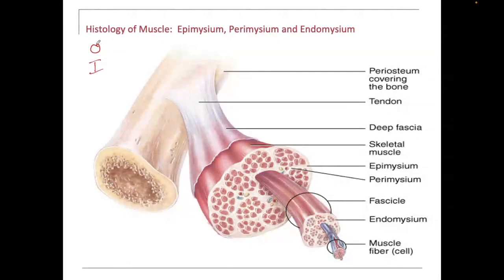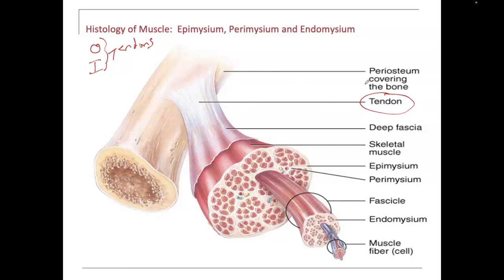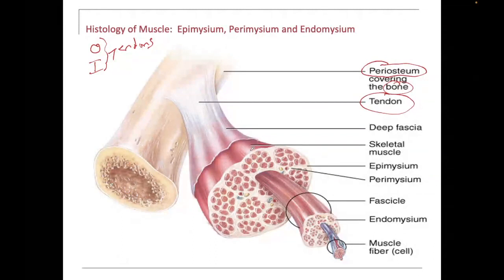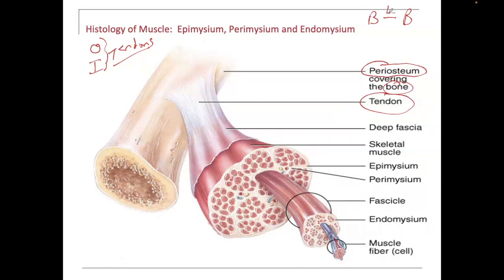Insertions are more distal, but these really are tendons. Tendons attach to bones. The specific part of the bone that tendons attach to is the outside of the bone, referred to as the periosteum. The outer part of the bone is the periosteum. The inside of the bone is the endosteum. So muscles attach to bones by way of tendons, but bone attaches to bone by way of ligaments.